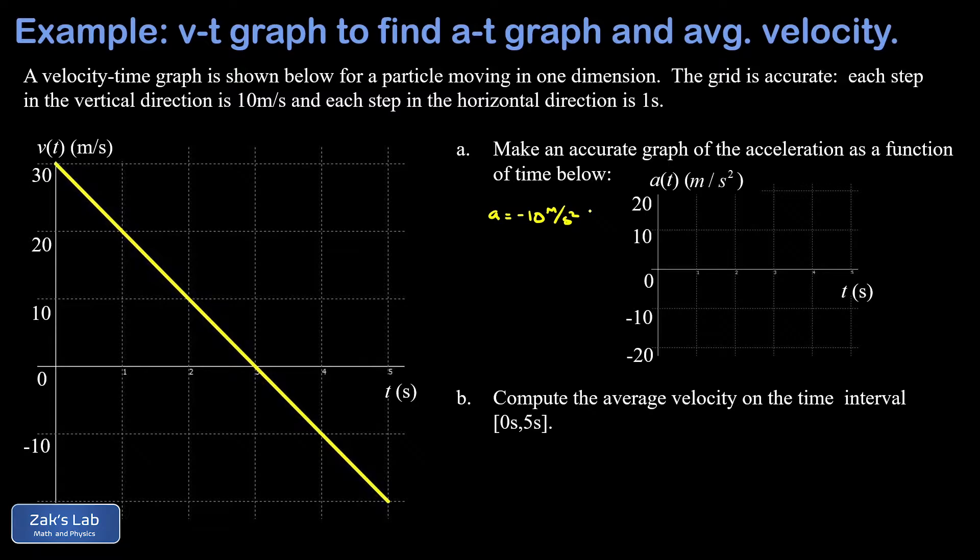If you wanted to be more formal about it, we could take any two points on this line for the velocity-time graph and compute the slope between them. So we could go all the way from the first point to the last, and the acceleration is going to be the change in velocity divided by the change in time.